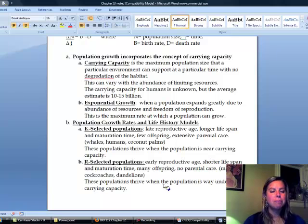The last part here is talking about population growth rates and life history models. Once again, we're going to talk about two extremes. There's K-selected and R-selected. K-selected populations are going to be ones that have a later reproductive age, longer lifespan, and few offspring, and extensive parental care. The examples I give are whales, humans, and coconut palms. I know some of you are thinking, coconut palms? How do they have parental care? Obviously, for plants, you're going to tweak that a little bit. But if you think about a coconut palm, they're putting all that energy into three, four, five coconuts. Whereas if you think about a dandelion, that's putting a little bit of energy into having thousands of seeds. K-selected populations are going to do really well when the population is near the carrying capacity just because they don't have a lot of offspring. So their populations normally shouldn't grow that out of control.